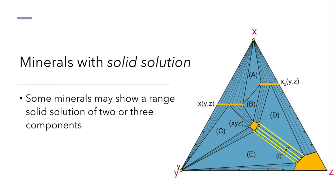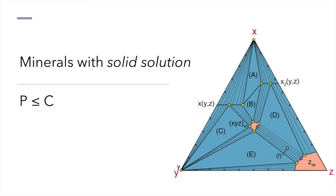You may encounter compatibility diagrams that do not show these intermediate solid solution tie lines at all. When our mineral assemblage includes minerals with solid solution, the number of phases in our stable assemblage may be less than or equal to the number of components in our system. The extra degrees of freedom we calculate when we apply the phase rule correspond to the independently variable components in our solid solution.